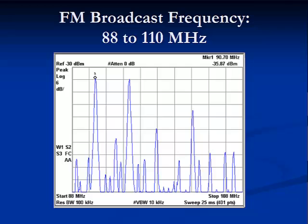Here is a display of a full band of FM broadcast frequencies from 88 megahertz to 110 megahertz. FM radio stations need a minimum bandwidth of 150 kilohertz and are required by the FCC to have at least 200 kilohertz guard bands between each of the stations to keep their respective bandwidths from overlapping.